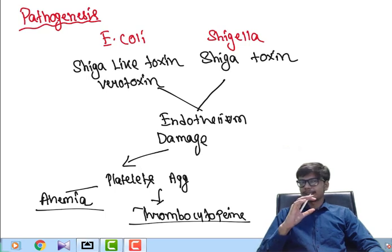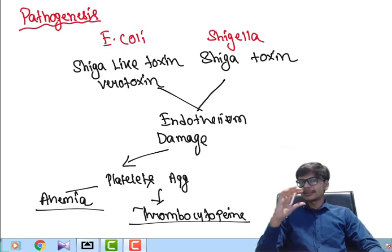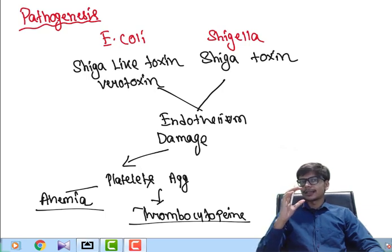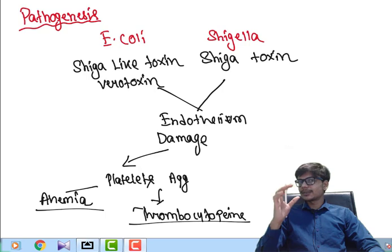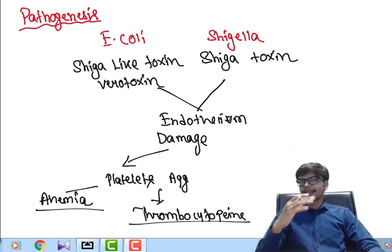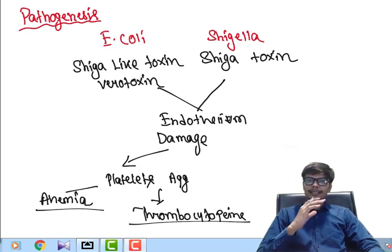When the renal vasculature and glomeruli are thrombosed, the GFR of the kidney is reduced. This leads to less filtration and accumulation of nitrogenous waste products in the circulation due to decreased excretion through urine, resulting in uremia and acute renal failure. So thrombosis of the renal vasculature reduces GFR, causes accumulation of nitrogenous waste in the blood, and results in the uremic component of Hemolytic Uremic Syndrome.